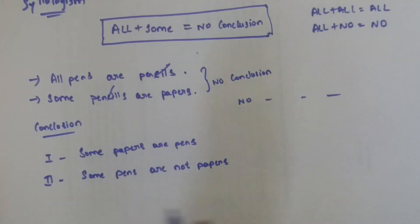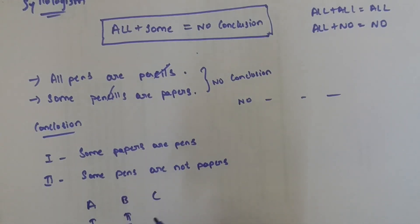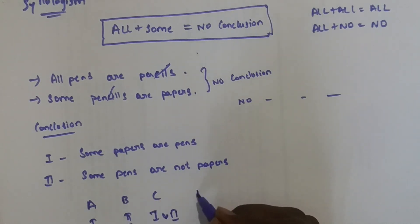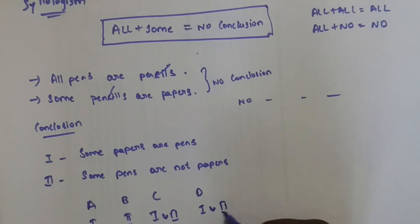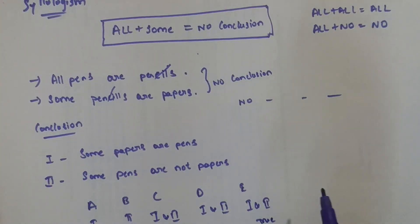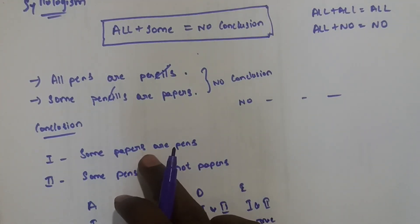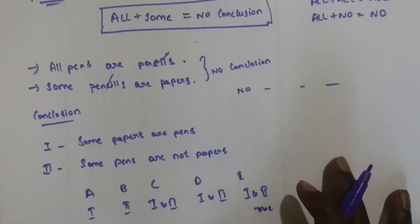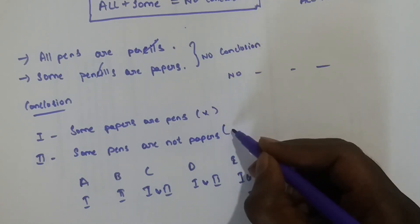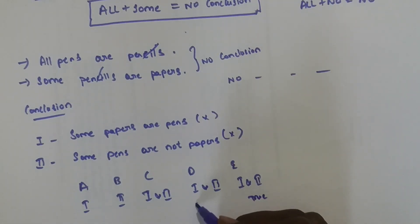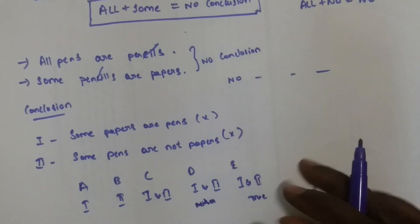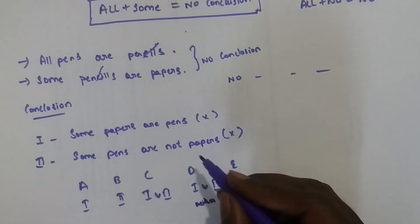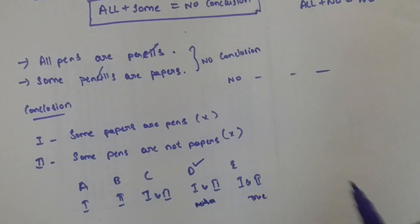The answer options are: A — only conclusion one is true, B — only two is true, C — one or two is true, D — neither one nor two is true, E — both one and two are true. Here, both conclusions don't follow — neither one follows nor two follows. So the answer is D.